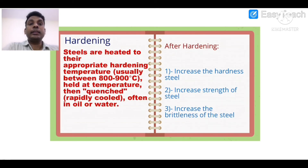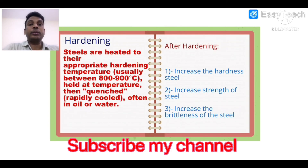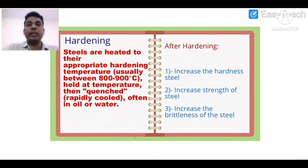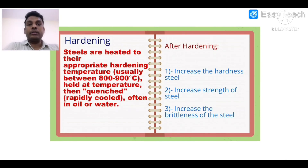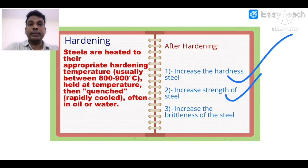Hardening: this is the most important process used in maximum companies and it produces through hardening. Steel is heated to the appropriate hardening temperature — usually between 800 to 900 degrees Celsius — held at temperature, then immediately quenched in oil or water. Benefits: hardness increases and tensile strength increases.